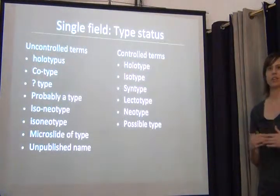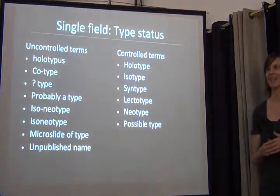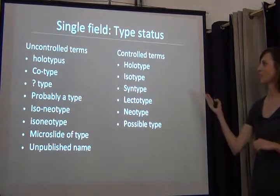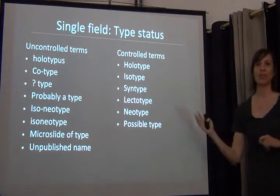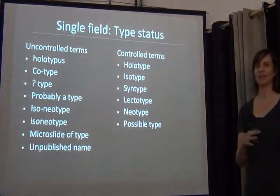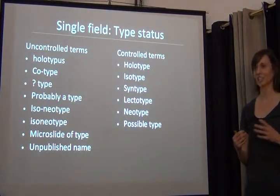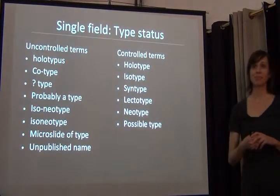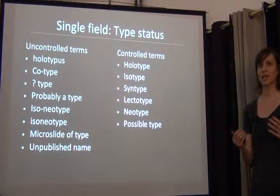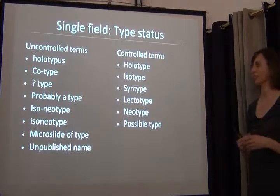As I started looking at all the available type statuses within the database, I found over a hundred different matches — very similar but also different statuses. So holotype could be in there as 'holotypist,' 'typist' is often used, 'cotype,' various ways to spell or use punctuation within a field, question marks, dashes, 'probably a type,' 'probably a holotype,' 'probably not a type,' 'possible type.'